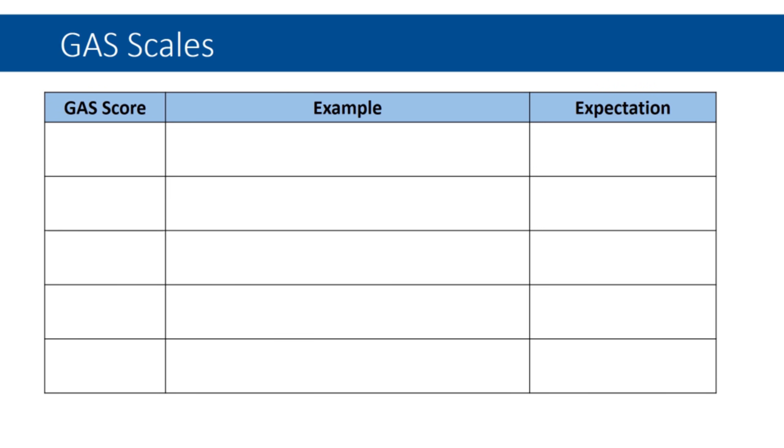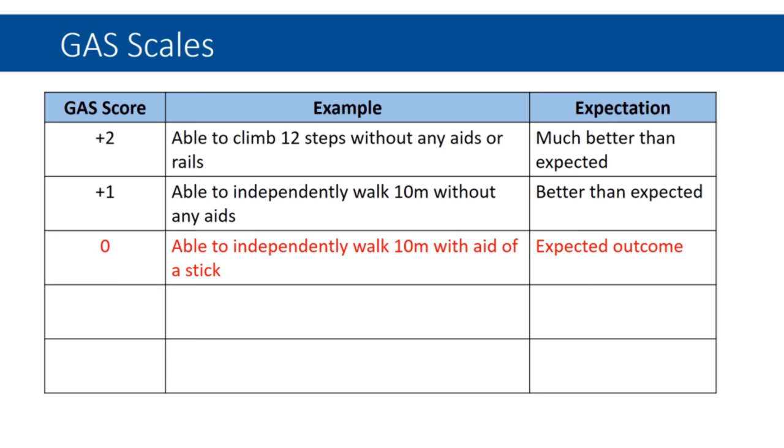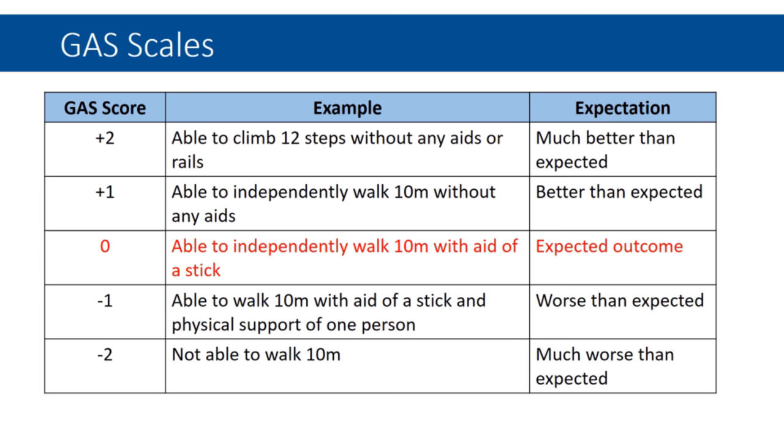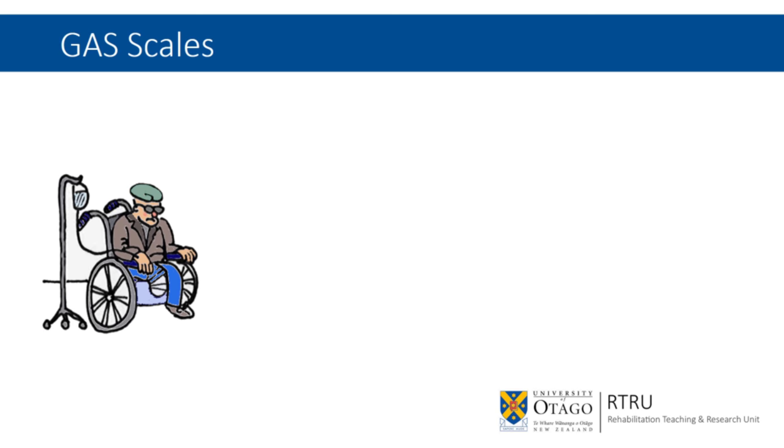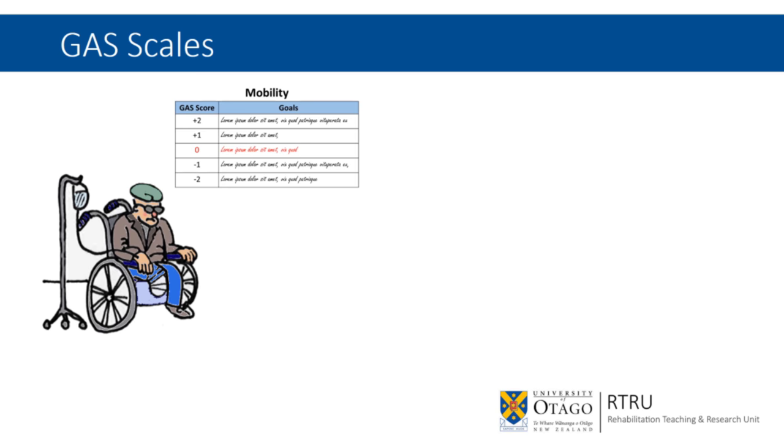Broadly speaking, GAS involves the creation of a multi-point scale, usually with five levels, where each point represents a different level of achievement of a goal. The midpoint on the GAS scale is the most important point, reflecting a person's expected level of achievement for a particular goal, and this is given a score of zero. Better or worse possible outcomes are then given the scores plus one, plus two, minus one, and minus two around this midpoint.